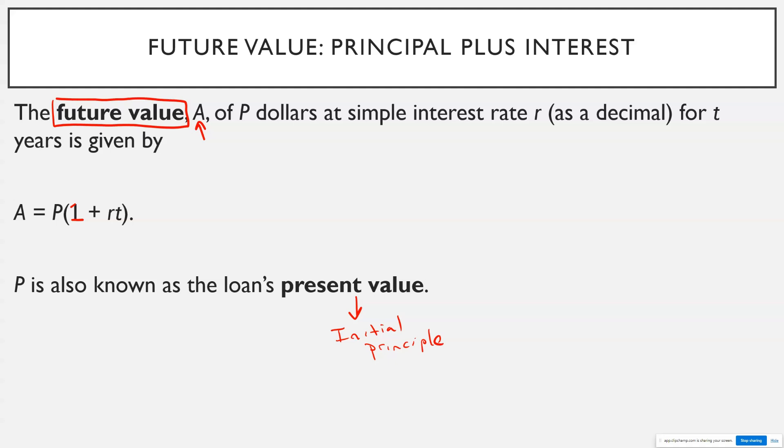So basically what this is saying is like, if I put in $10,000, and I'm getting 5% for 15 years, how much will I have 15 years later?